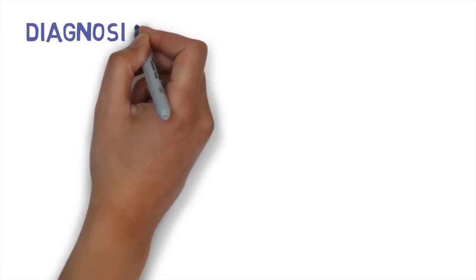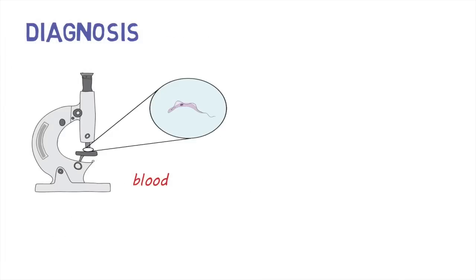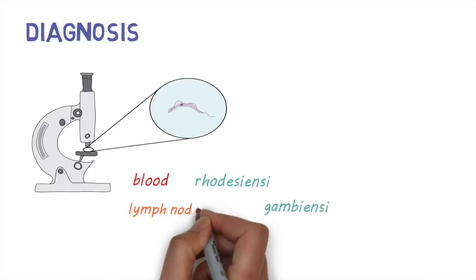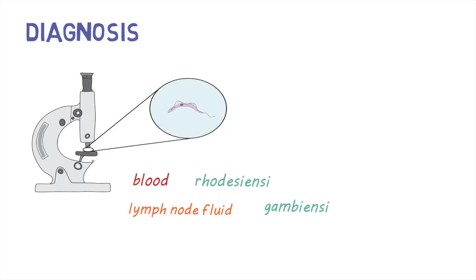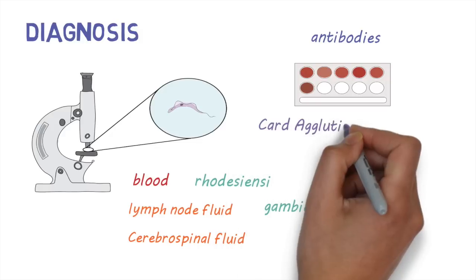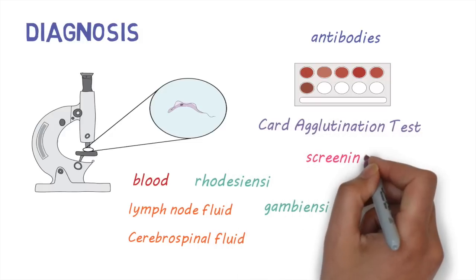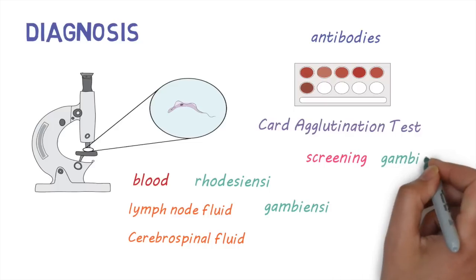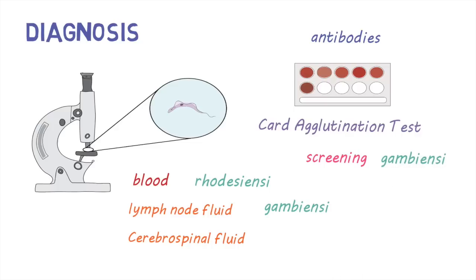The disease is diagnosed by laboratory techniques, usually by examining the blood under the microscope and looking for the parasite. This usually works well for Rhodesiensi infections but is harder to do for Gambiensi infections. The classic method of diagnosing Gambiensi infections is by examining fluid from a lymph node under a microscope. Second stage infections can be diagnosed by examining cerebrospinal fluid. Blood tests that look for antibodies against the parasite can sometimes be used, including a card agglutination test used for screening, which only works for Gambiensi infections. PCR tests that look for the genetic fingerprint of the parasite can also be used.